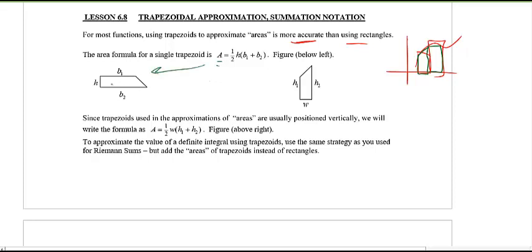Why do we have that? It's like having the height, and then the half, and then the b₁ plus b₂ is like taking the average of the two parallel sides.